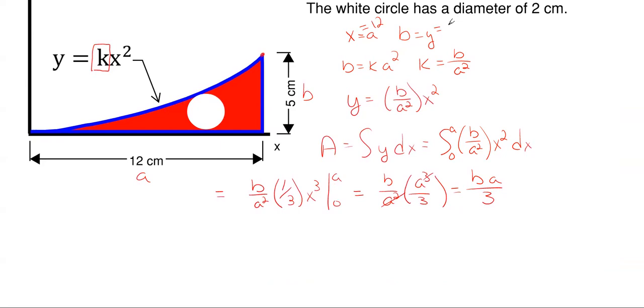We would have a total of x equals a which is 12 centimeters and b is equal to y which is my 5 centimeters. My total area under my curve would be 5 centimeters times 12 centimeters all divided by 3 which gives me a total of 20 centimeters squared.